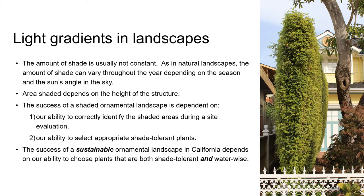If the structure is a building, wall, or fence, then the height will be constant. But if there's a living landscape element such as a hedge or a young tree, the amount of shade is going to increase as these plants grow, unless you prune them to keep them to a specific height. You need to take this growth into consideration when you're selecting plants for the landscape.